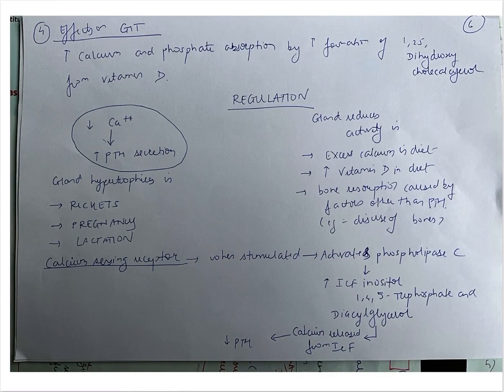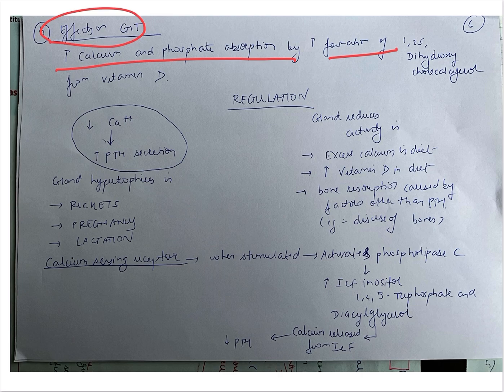Effects on the GIT: there is increased calcium and phosphate absorption by formation of 1,25 dihydroxycholecalciferol from vitamin D.